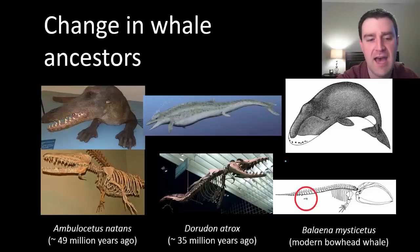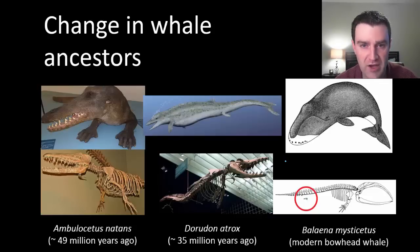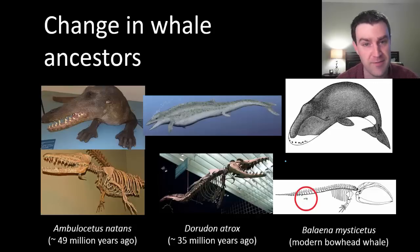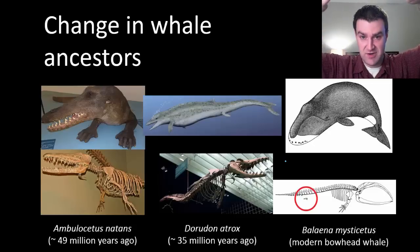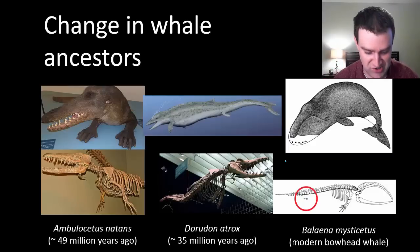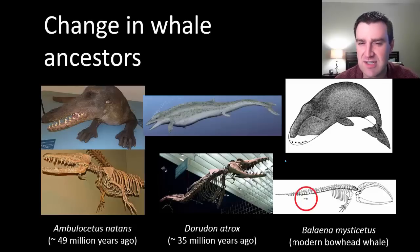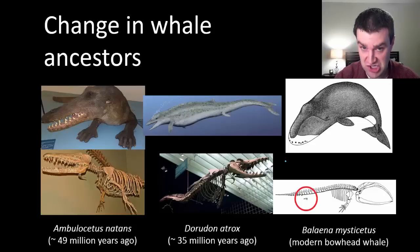A very famous example is the change in the long-ago ancestors of modern whale species. Whales are really interesting animals because they obviously live in the ocean and yet they're clearly mammals — we find almost all other mammal species on land. Whales still have lungs and must surface to take in air before submerging again. They still nurse their young with milk, all of which suggests that long ago whale ancestors were on land and then changed over many generations to return to the ocean.